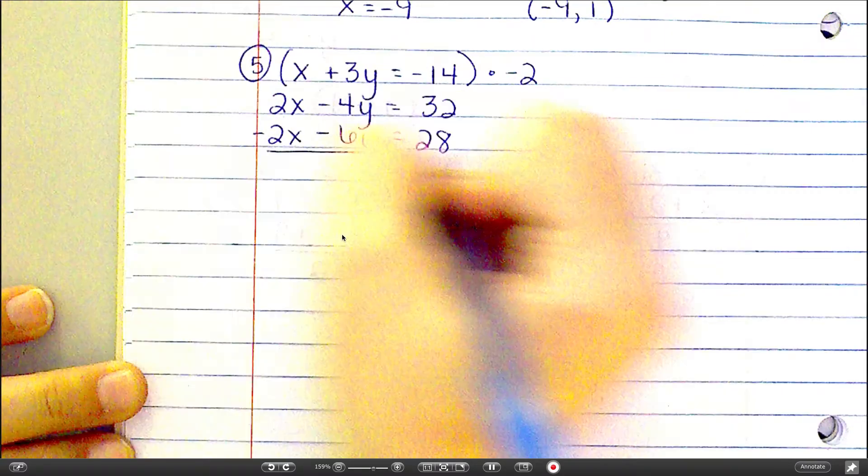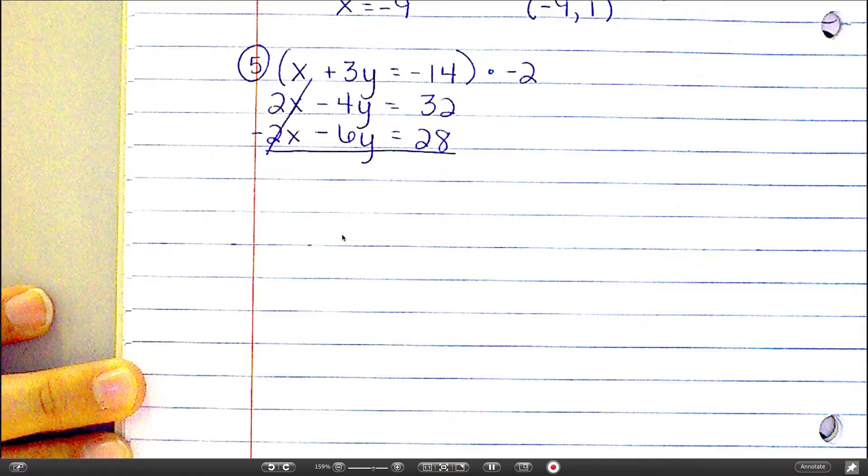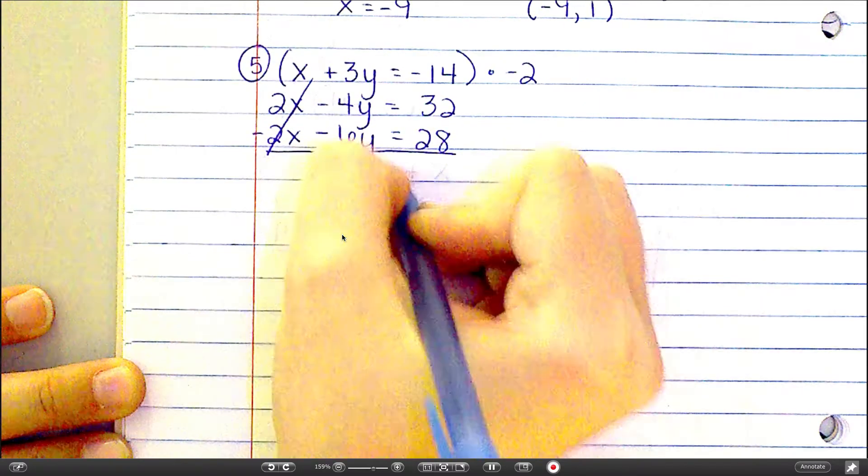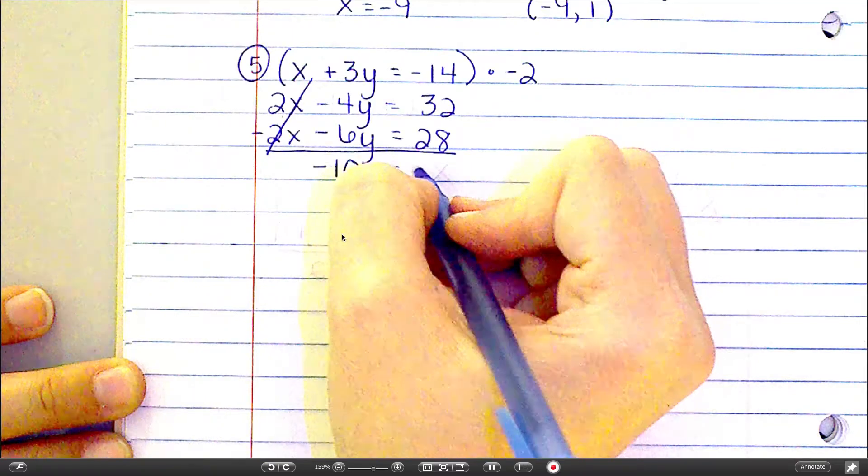Now let's add those together. Those are gone. Negative 4 plus negative 6 is negative 10, and 32 plus 28 is 60.